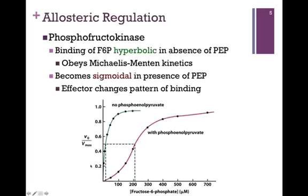However, in the presence of PEP — that's the red trace — we reach the same saturation point, but look how much higher that Km value is at the dashed halfway point. A much larger Km indicates a much reduced affinity for that substrate. You'll also notice the shape of the curve has changed: it is no longer hyperbolic, it is now sigmoidal. And that is the hallmark of an allosteric enzyme or allosteric regulation.